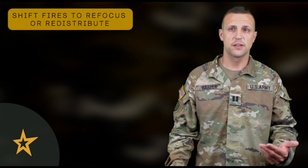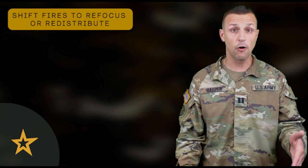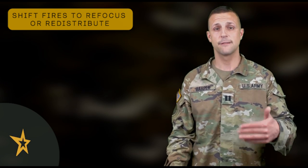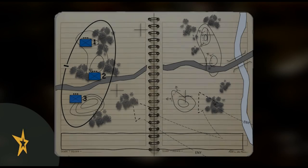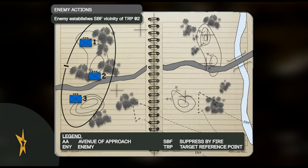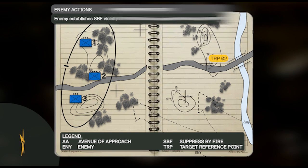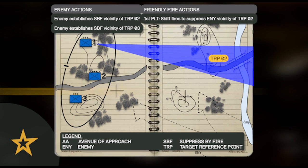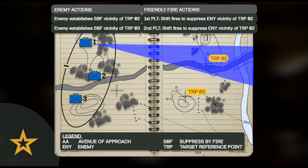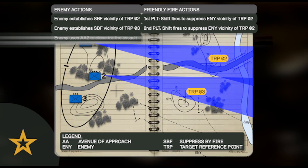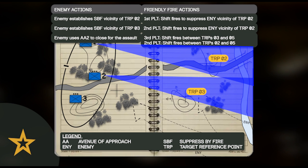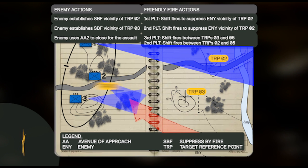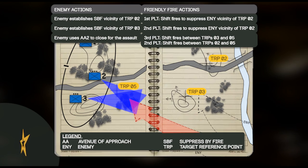Next, we shift fires to refocus and redistribute. The commander shifts fires based on the evolving estimate of the situation as the fight happens. For example, if the enemy establishes a support by fire position near TRP-2, 1st platoon shifts fire to suppress. If the enemy has another support by fire position near TRP-3, 2nd platoon shifts fire to suppress. Then the enemy assault force uses their avenue of approach to close in for their assault, so 3rd and 2nd platoons shift fire from their previous TRPs and fire on TRP-5.